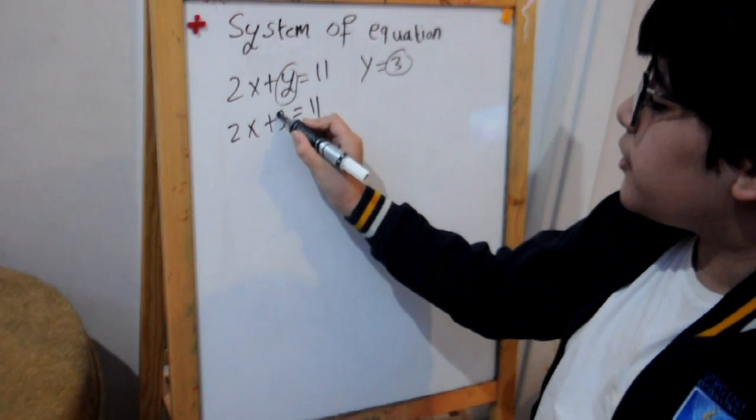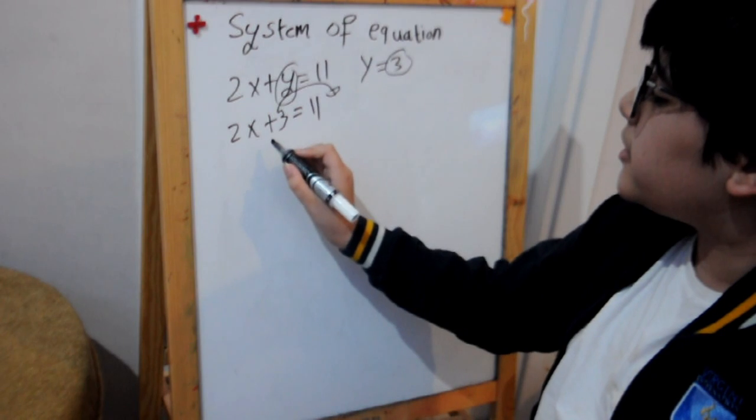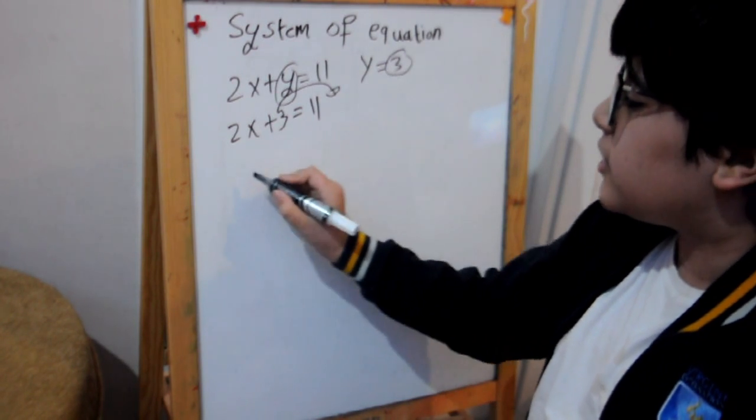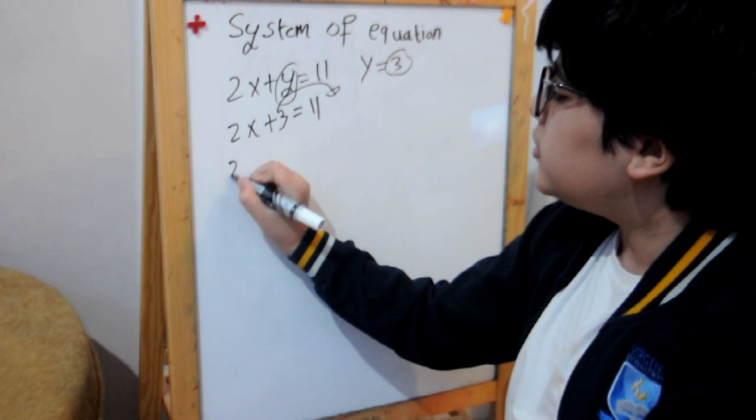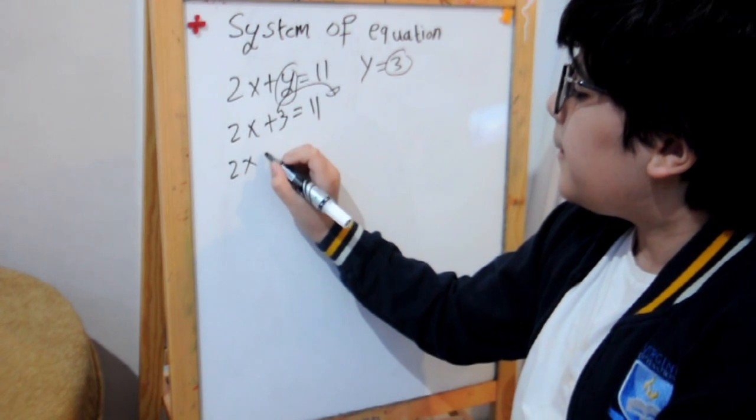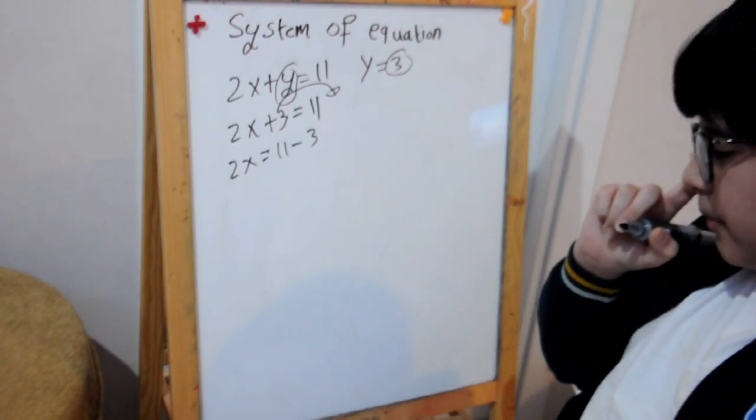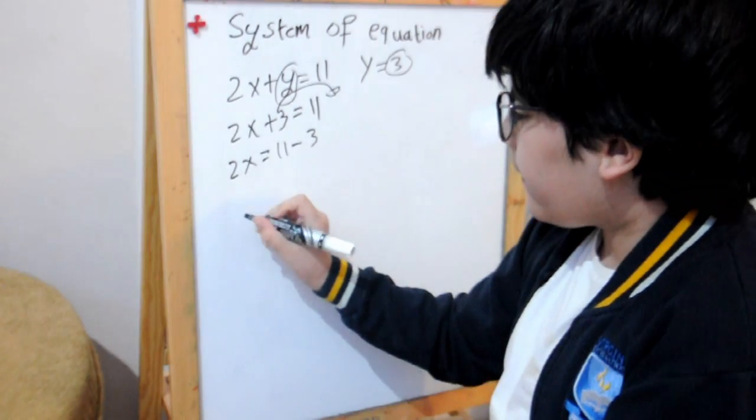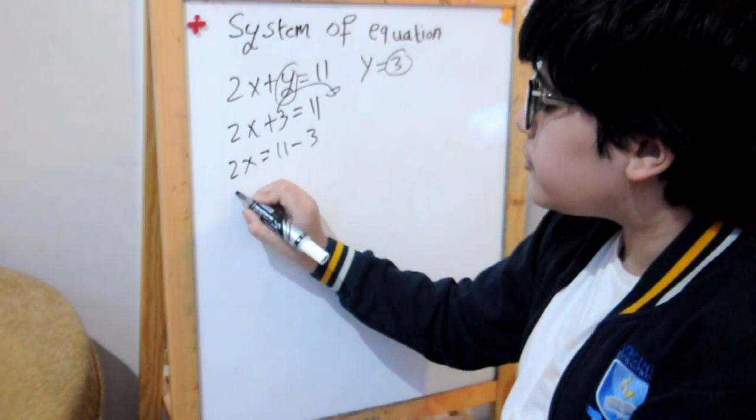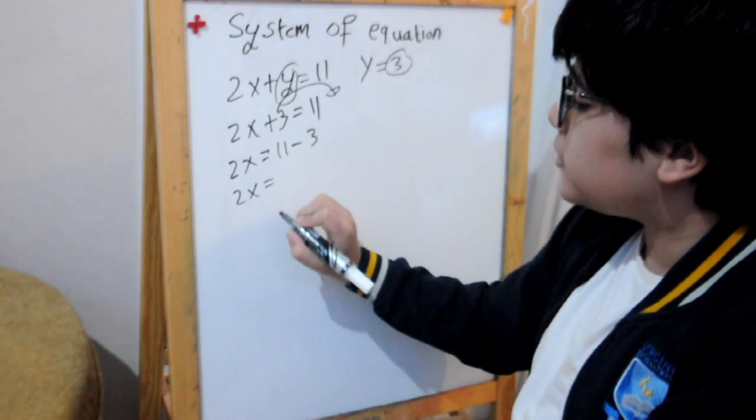Then you put the 3 onto the other side, which will make it turn from positive to negative, which will look like this: 2x equals 11 minus 3.